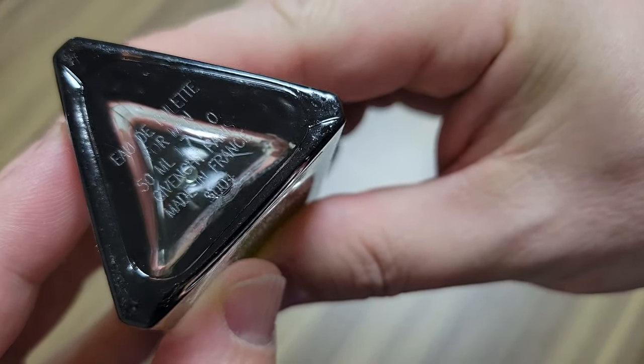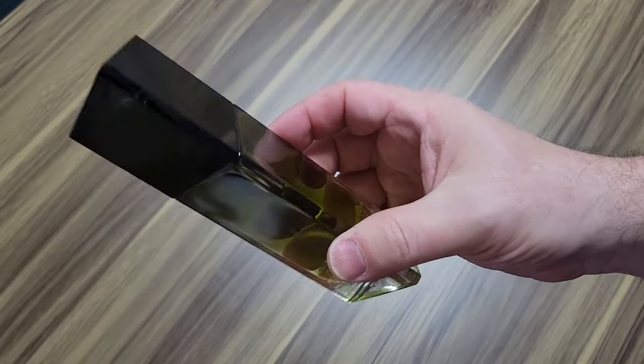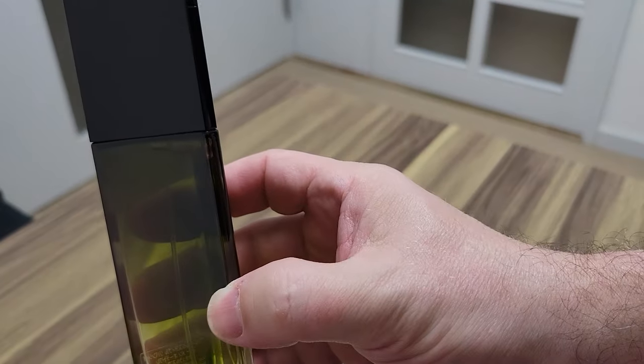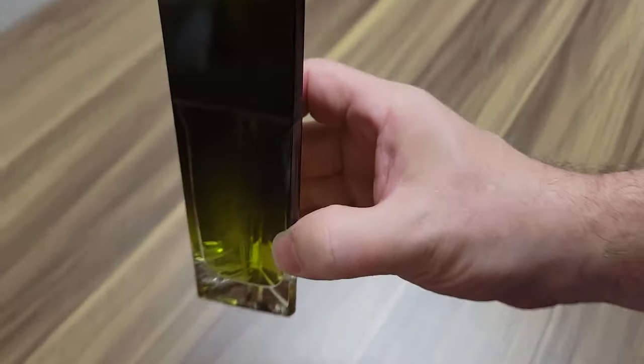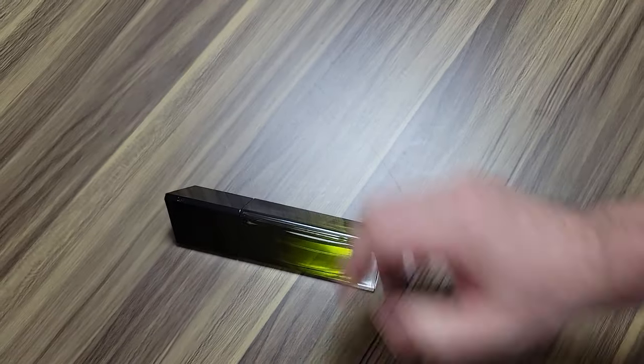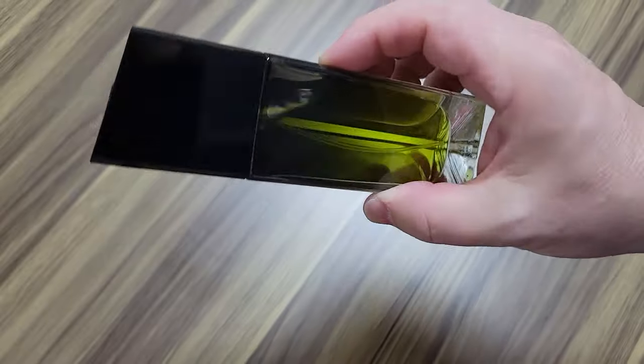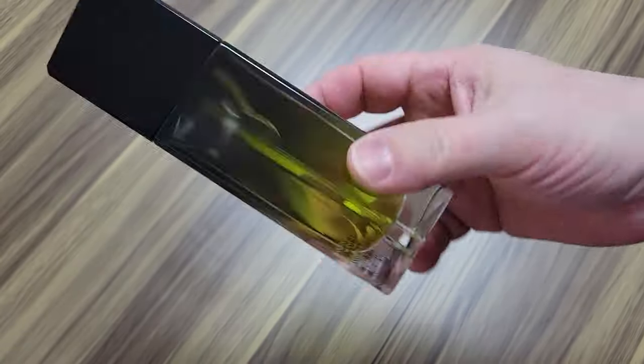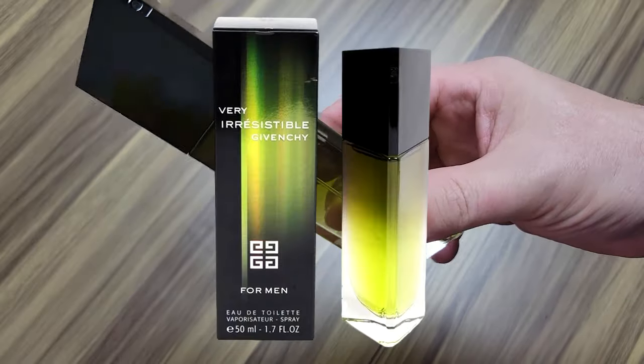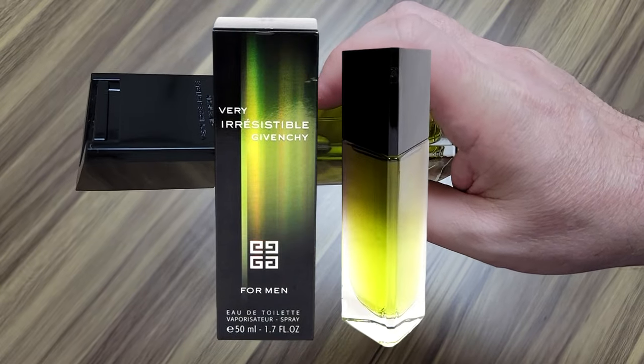Eau de toilette for men. There's the batch code. 5D04. So I just looked this up, guys. This is a 2005 bottle and it is nearly full. As you can see it shaking around the top. So this is a full 2005 bottle. And this came out, this debuted in 2005. So this is a first year bottle, guys. Really cool. Unfortunately, I don't have the retail box, but if you check out episode 61, you'll see what the retail box looks like.